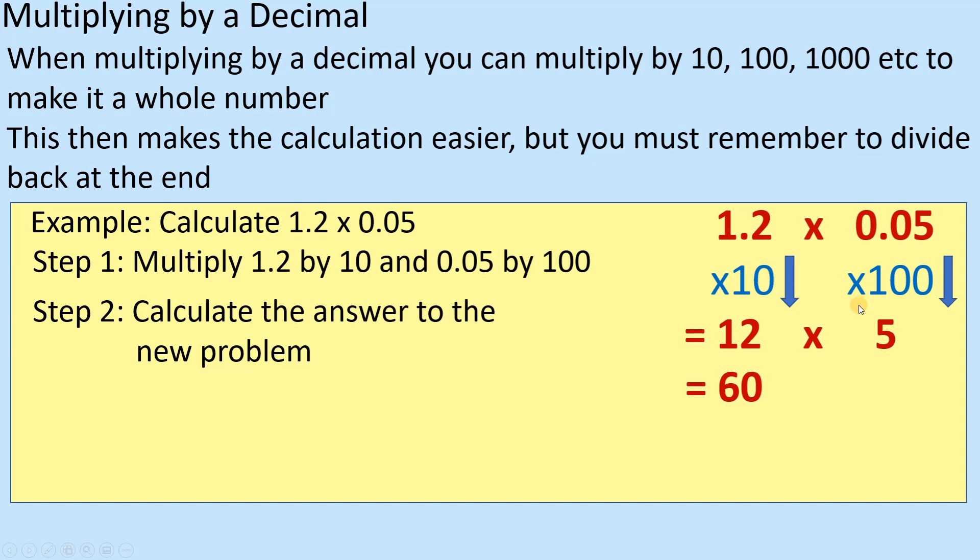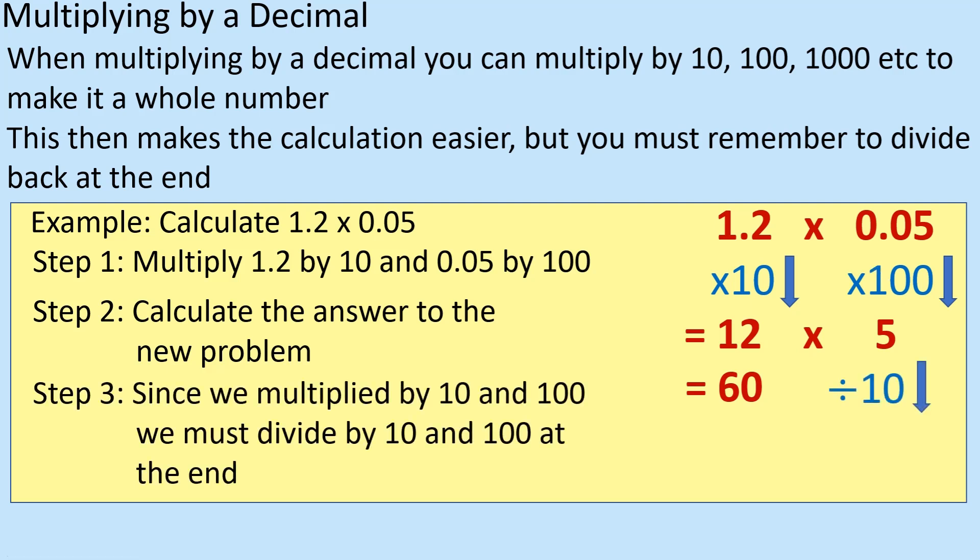But I did times these two numbers by 10 and 100, so I need to divide it by these two numbers to bring it back down. So I need to divide it by 10 and then divide it by 100, or divide by 1000. So if we divide by 10 first and then divide by 100 second, it's going to give you 0.06, and that actually would be my answer.